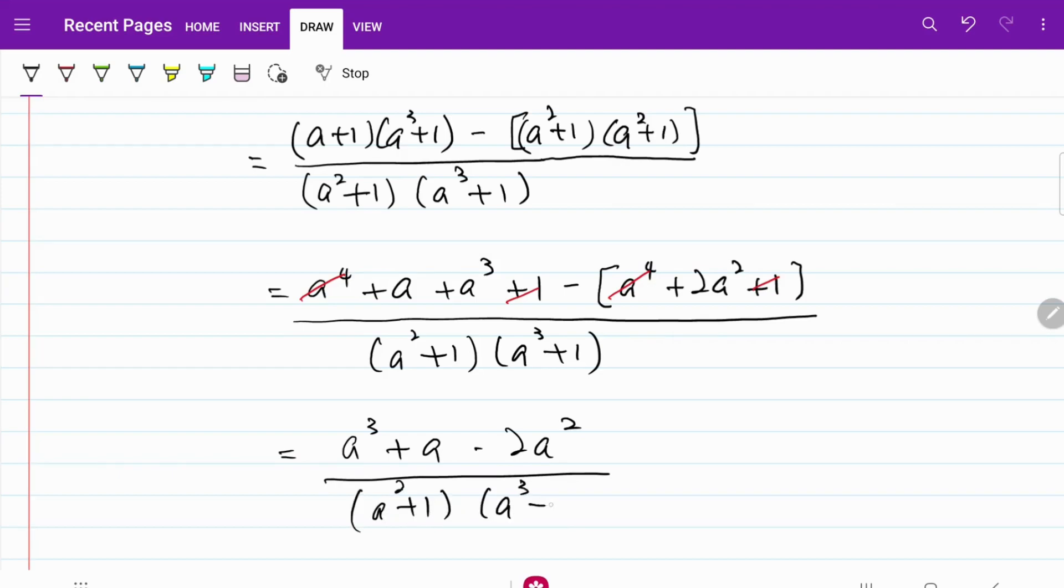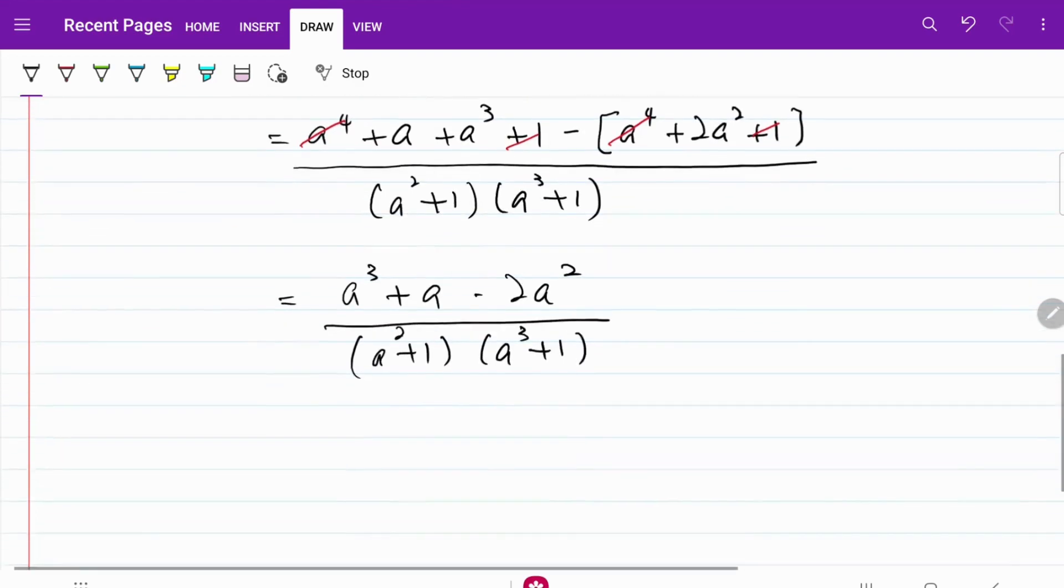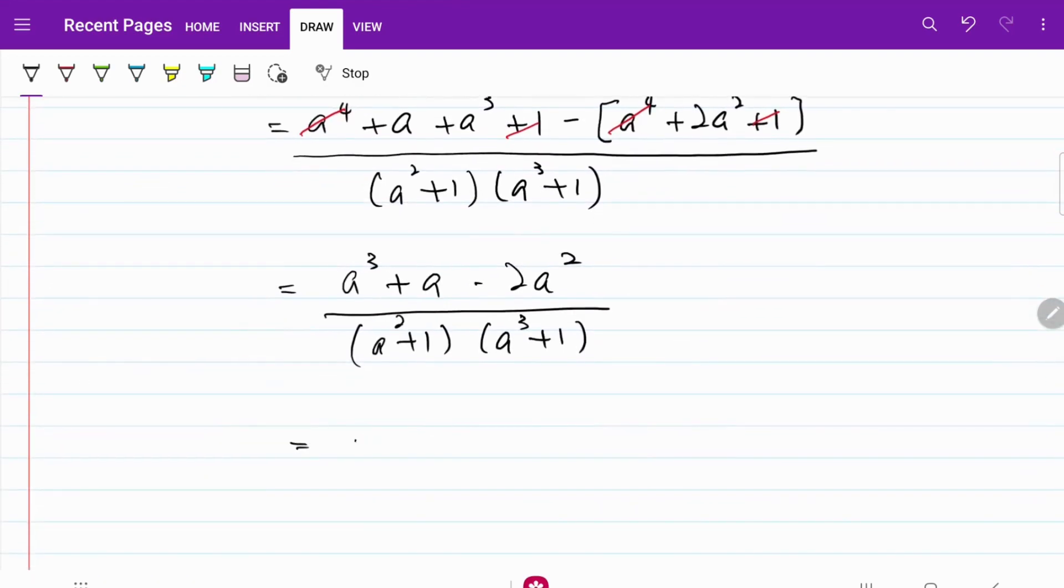If I rearrange that, what I get is a cubed minus 2a squared plus a over the same common denominator of a squared plus 1, a cubed plus 1.